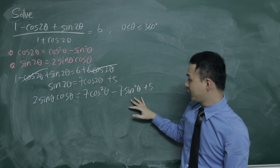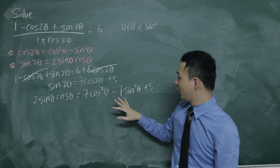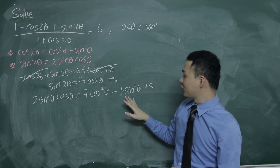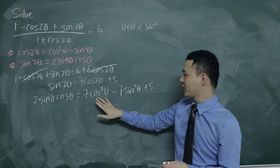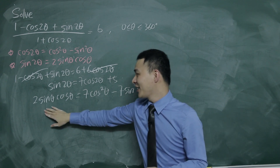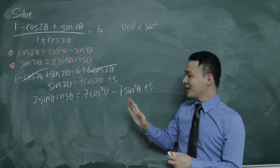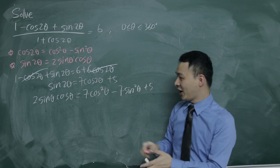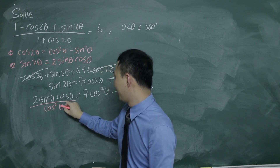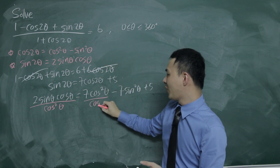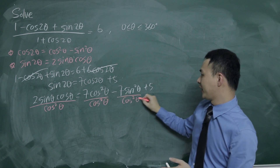Is it possible to factorize this? What I'm trying to do is — because factorizing is quite hard when you have cos², sin², sin cos, and a number — the easiest way I can think of is to divide everything by cos²θ. I'll explain this in a moment. So I divide everything by cos²θ.